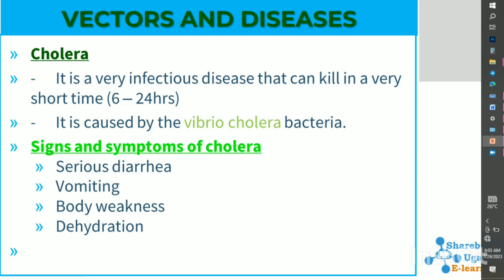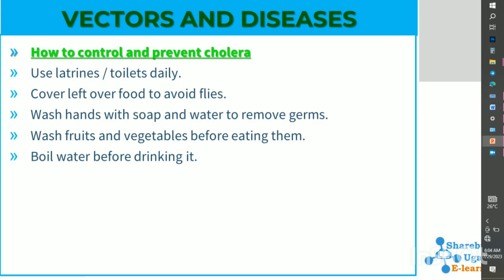Another disease spread by a housefly is cholera, which is an infectious disease that is very deadly and can kill within six to twenty-four hours. It is caused by a bacteria called Vibrio cholerae. Signs and symptoms of cholera include serious diarrhea, vomiting, body weakness, and dehydration.